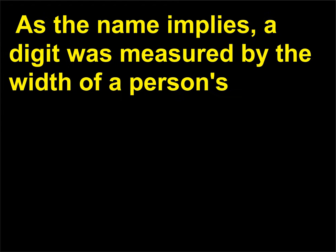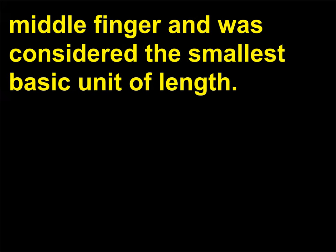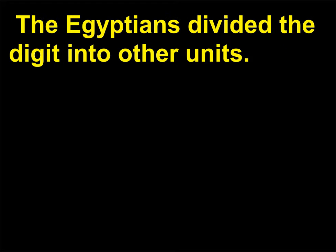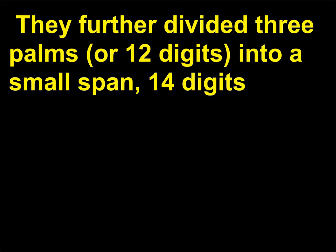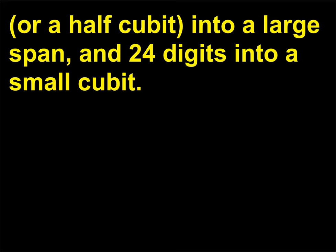And the Babylonian cubit would be equal to 530 mm, or 20.87 inches. The metric unit millimeters is used here, as it is an easier way to see the difference between these two cubits. As the name implies, a digit was measured by the width of a person's middle finger and was considered the smallest basic unit of length. The Egyptians divided the digit into other units. For example, 28 digits equaled a cubit, 4 digits equaled a palm, and 5 digits equaled a hand. They further divided 3 palms, or 12 digits, into a small span; 14 digits, or a half cubit, into a large span; and 24 digits into a small cubit.